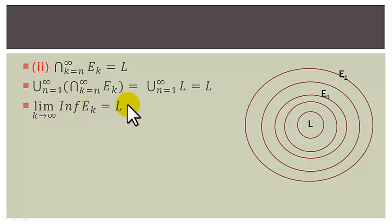We have shown that the limit supremum of Ek as k tends to infinity is equal to the limit infimum of Ek as k tends to infinity. Hence, this decreasing sequence of sets converges to a limit.